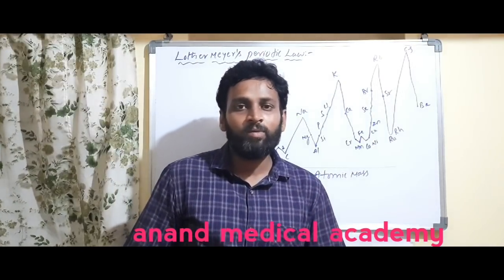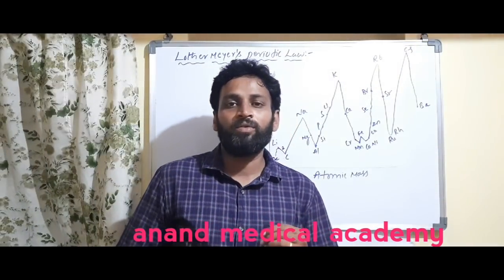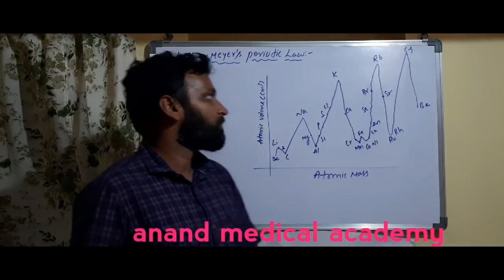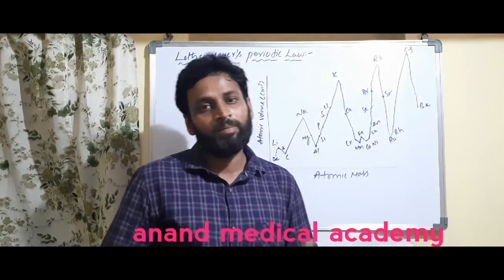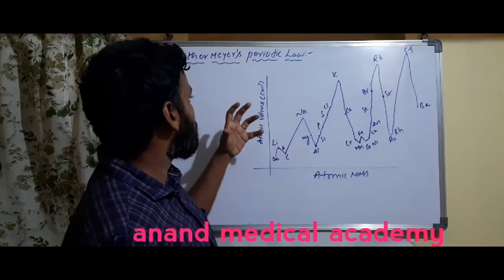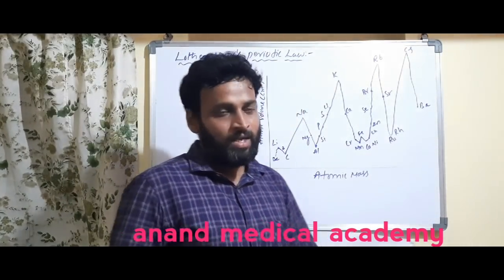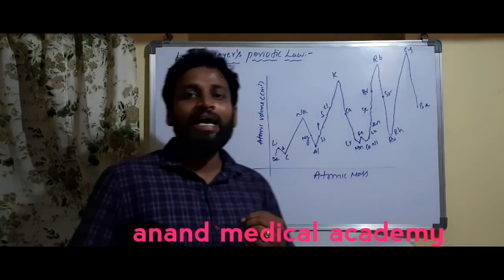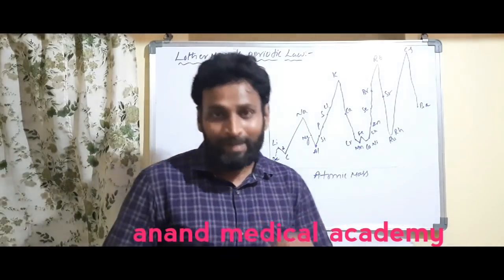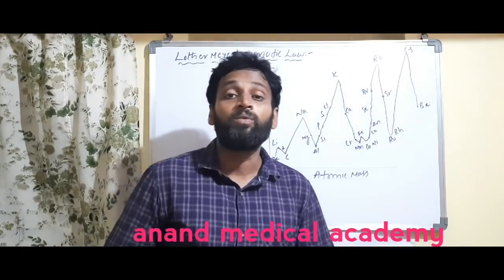In Mendeleev's periodic table, what was given previously: the physical and chemical properties of the elements are the periodic function of their atomic masses. Similarly, Lothar Mayer gave a classification. The physical and chemical properties of the elements are the periodic function of their atomic volumes.